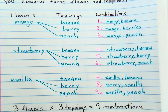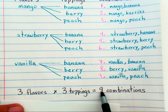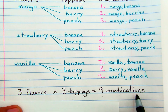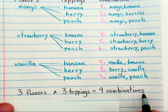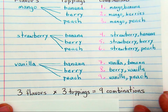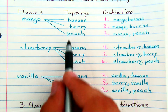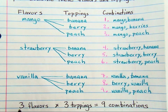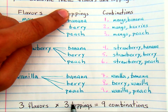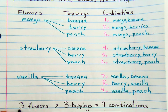Three flavors times three toppings equals nine combinations — that's where the multiplication comes in. That's the shortcut that shows how multiplication can save you the time of writing out all of the different flavors, toppings, and combinations. If you multiply one choice times the second choice, you get the total number of combinations between those two choices.